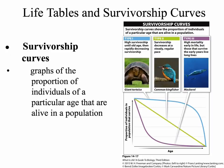Here's another picture of the three survivorship curves. Turtles show a Type 1 survivorship curve, with high survivorship until old age and then rapid decrease as they get older. Kingfishers show a Type 2 curve, which shows a steady, linear decrease at a regular pace over time. Type 3 includes high mortality early in life, and those that survive can live to be very old. Mackerels are an example of a Type 3 curve.